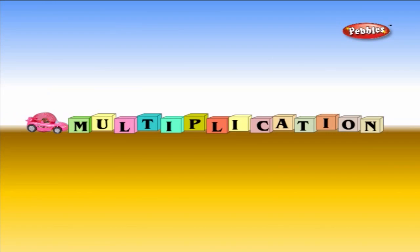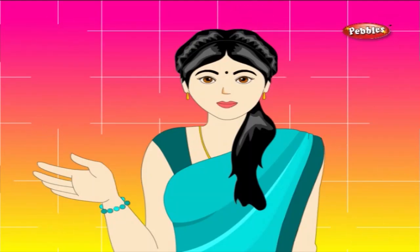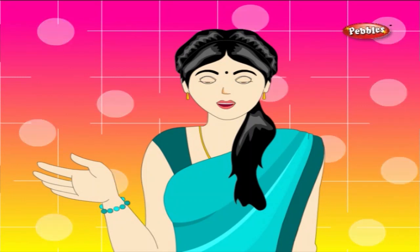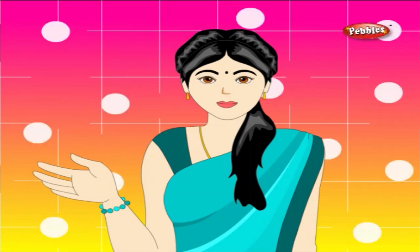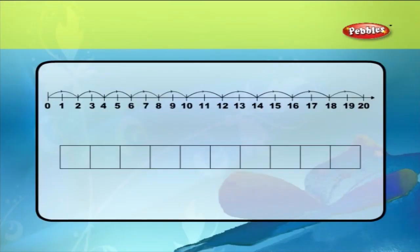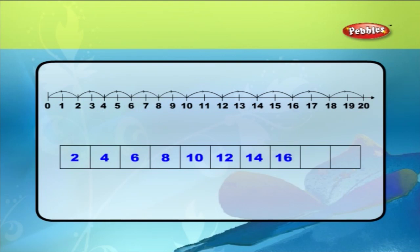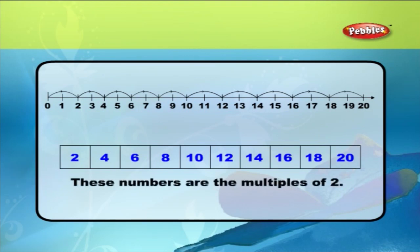Multiplication. Multiplication is nothing but repeated addition. We will learn multiplication by skip counting. Skip counting by 2's. In the given number line, we have 20 numbers. Starting from 0, if you skip one number and jump to the next, we get 2, 4, 6, 8, 10, 12, 14, 16, 18, and 20. These numbers are the multiples of 2.